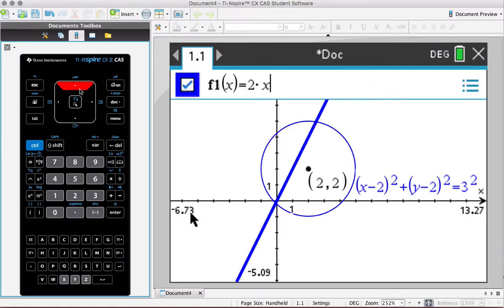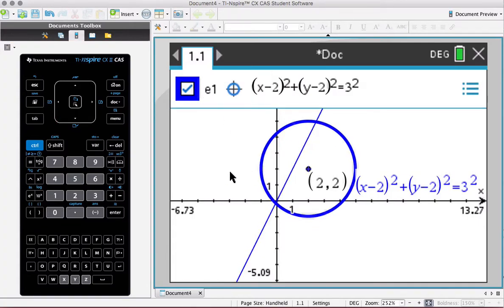Again if I hit tab I can scroll up and see my function, but I have to click on my circle to get back to my relation. So make sure you don't get tripped up by that.